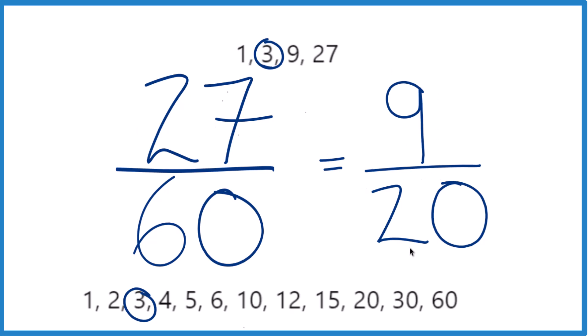And these are equivalent. They have the same value. It's just this is simplified or reduced to lowest terms. And we can't simplify 9 20ths any further. It is already in lowest terms.